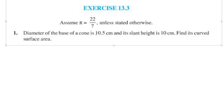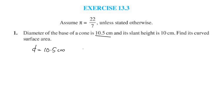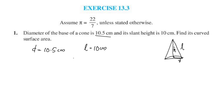Let's start with the given values. D is equal to 10.5 centimetres and slant height L is equal to 10 centimetres. Here is a cone. This is the slant height, this is the radius, here is the center of the base, and this is the perpendicular height. The slant height L is 10 centimetres and the diameter is 10.5.